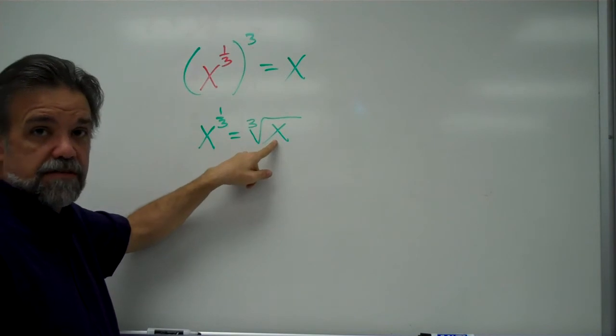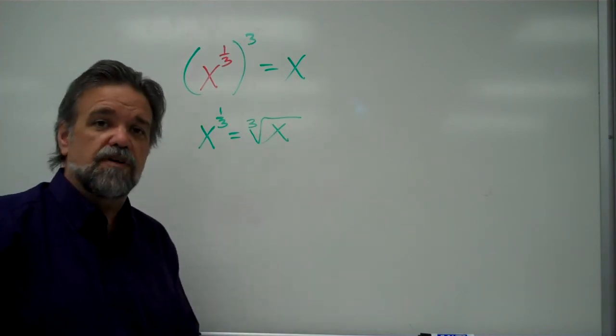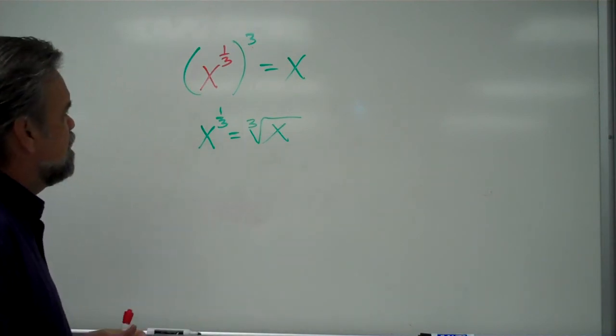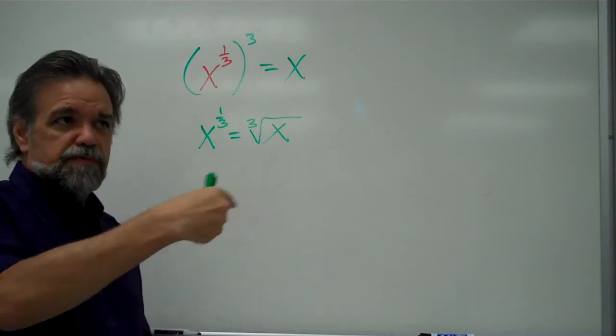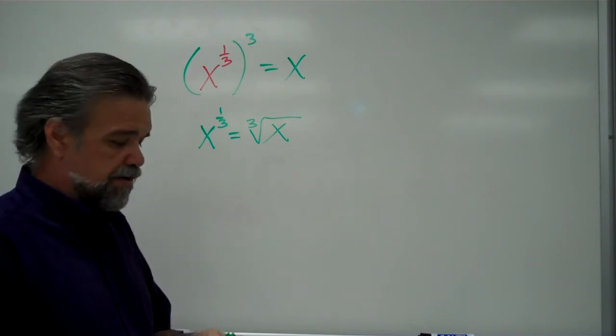This symbol here is known as a radical symbol. And this guy right here, x, is the radicand. Whatever's inside the radical is called the radicand. Just a little vocabulary for you. So, cube root of x means the number that when you multiply by itself three times, you get x. And we can keep on going on and on and on.